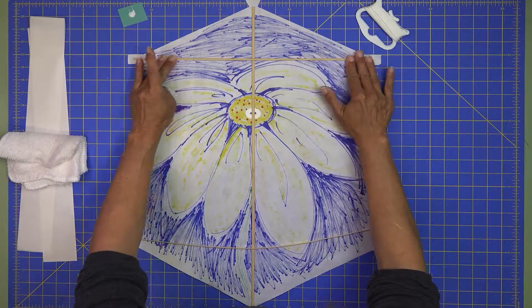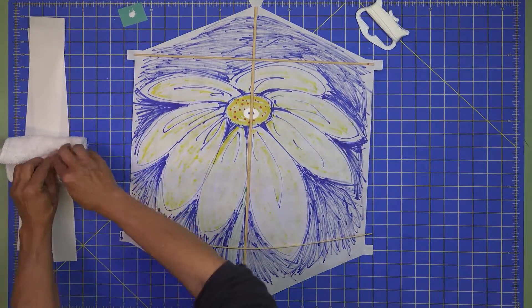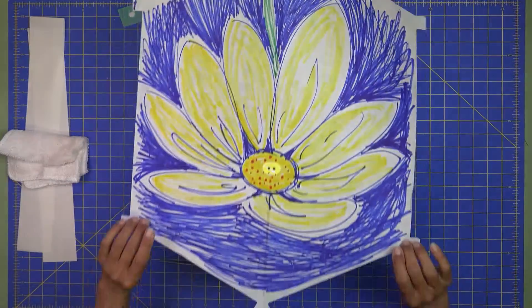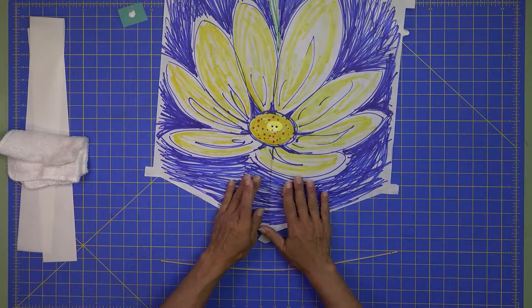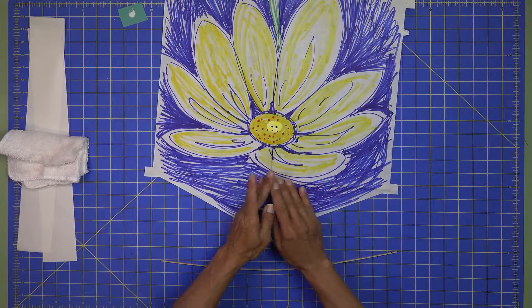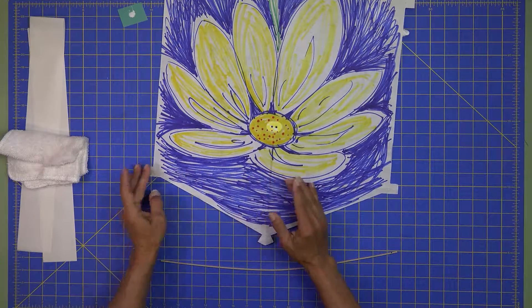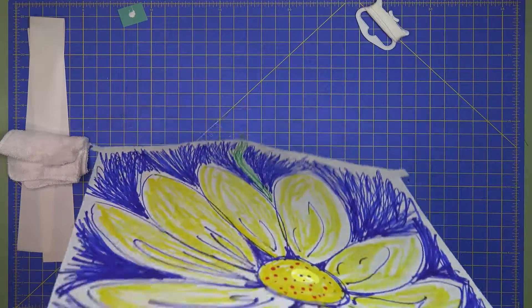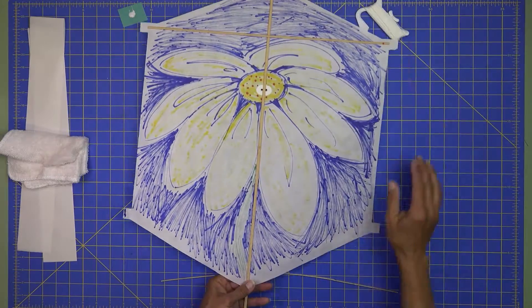So once we've got that mashed on there, pressed on there, again, we want to turn the kite over carefully and mash. Again, try to make sure we have as much paper and bamboo in contact as possible. Not trying to mash right there at the center over the center spar, though. That's okay. So once we have that done, now we're ready to glue on the black spar to the bottom.